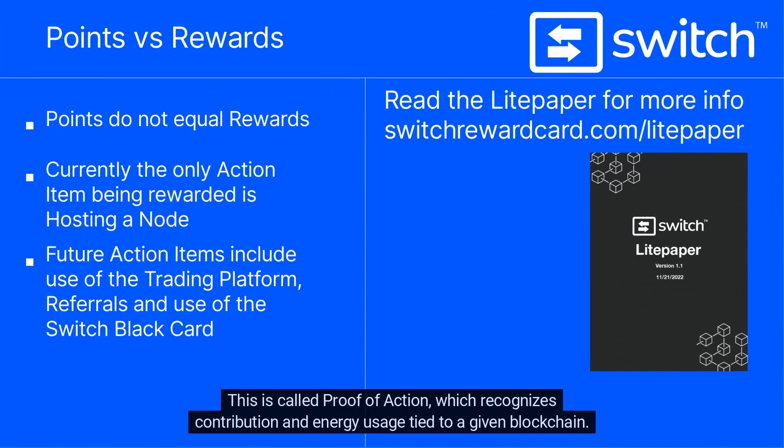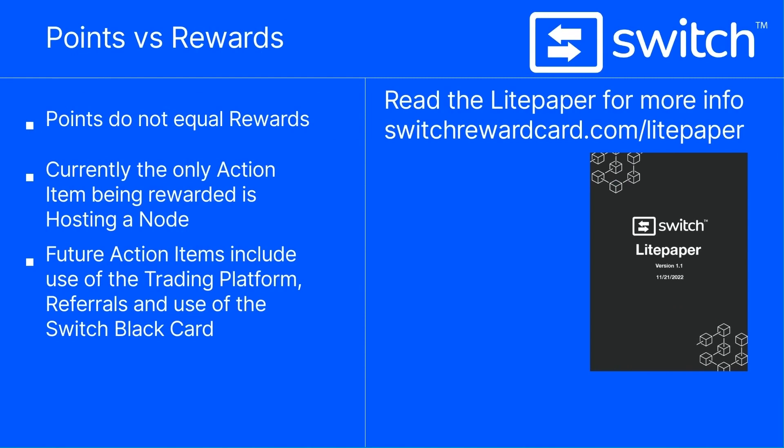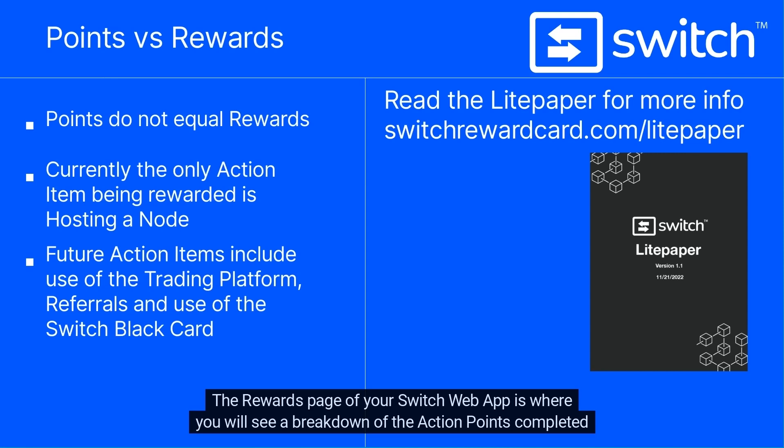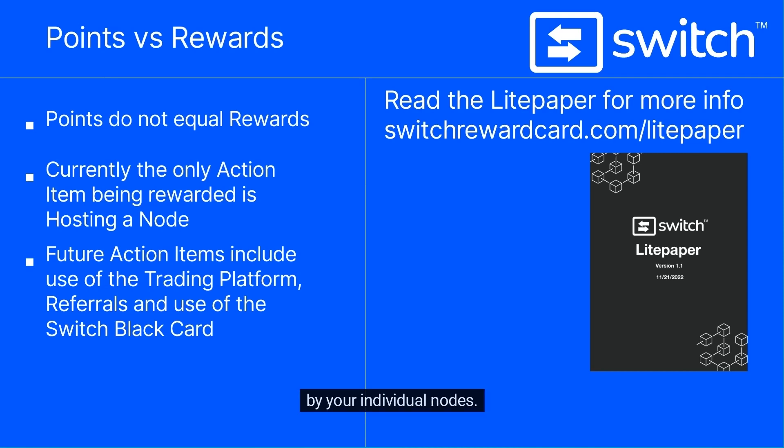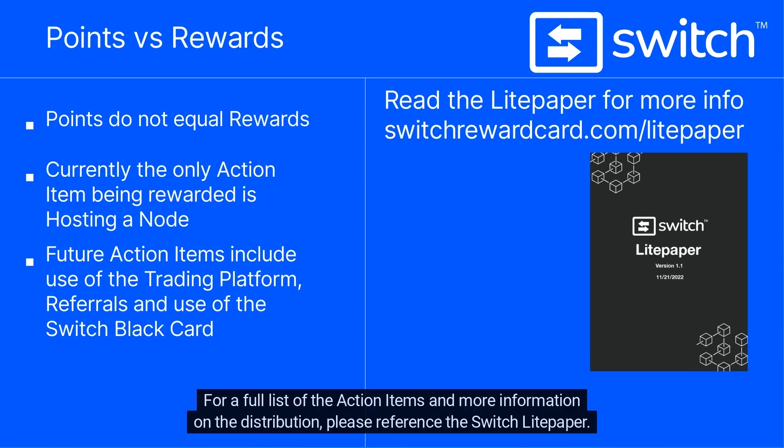This is called Proof of Action, which recognizes contribution and energy usage tied to a given blockchain. The rewards page of your Switch web app is where you will see a breakdown of the action points completed by your individual nodes. For a full list of the action items and more information on the distribution, please reference the Switch Light Paper.